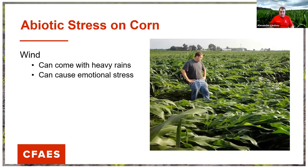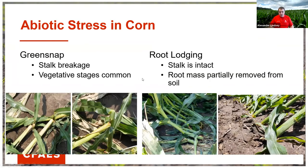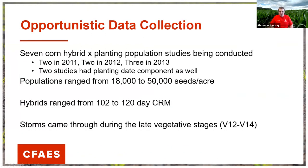The other aspect I wanted to point out is that with these strong storms comes wind, and it can cause stress on the plant — including emotional stress. There's a picture of me in 2013 looking at one of my PhD trials that experienced lodging. Wind stress can come in two forms: green snap, where you have complete breakage of the stalk, or lodging, where the stalk remains intact but the root mass is partially removed from the soil, leading to a gooseneck recovery response. We had a chance to collect some opportunistic data on this.